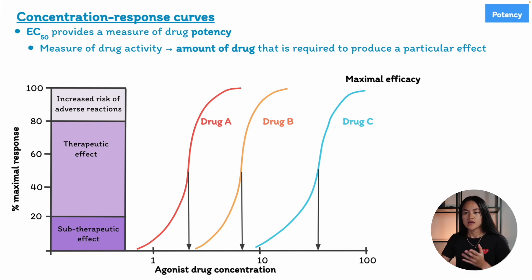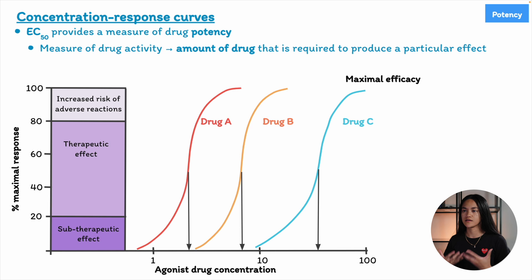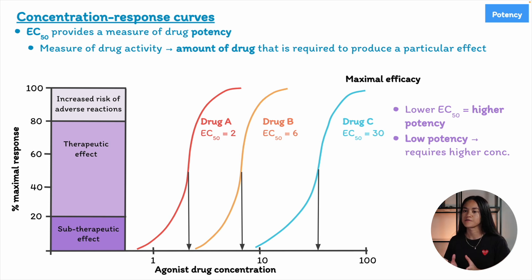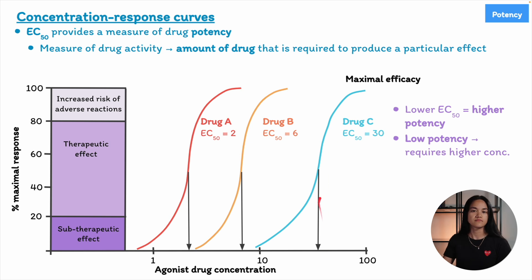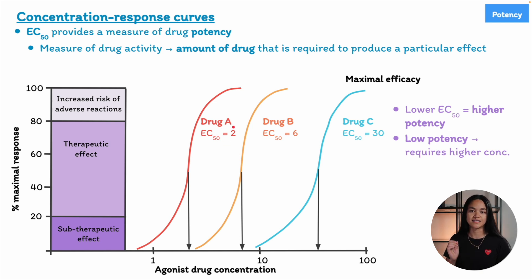If a drug has high potency, a lower concentration is sufficient to achieve the desired effect. A drug with low potency requires a higher concentration to produce the same effect. A lower EC50 means the drug is more potent. For example, drug A has an EC50 of 2 molar, drug B has an EC50 of 6, and drug C has an EC50 of 30. Drugs with lower EC50 values are more potent — they need fewer drug molecules to produce the same effect.